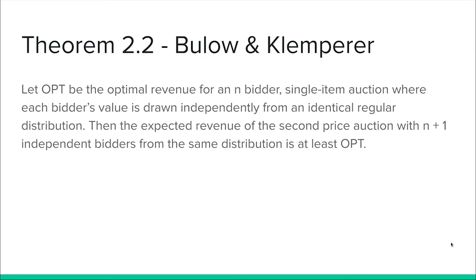Now that we have a notion of an optimal auction as given by Myerson, the question arises: why don't we always use an optimal auction? One reason is that it has very high computational complexity. Another reason is that it requires prior information about the bidders. VCG auction, on the other hand, is simple and prior-free, and it yields the efficient allocation.